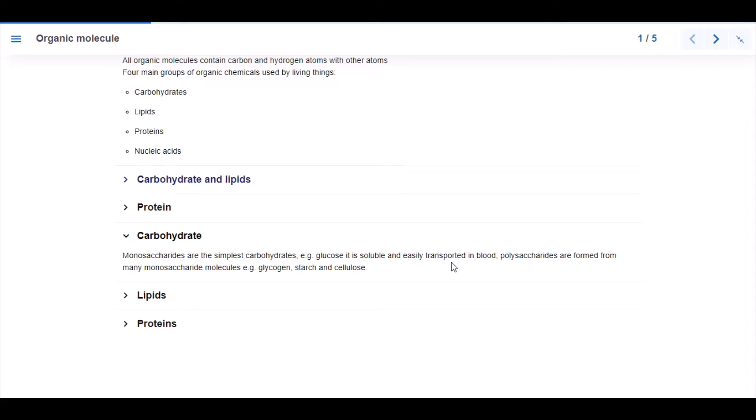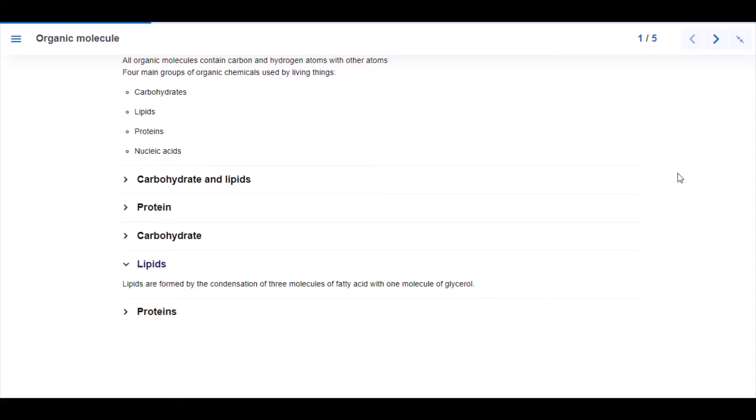Carbohydrates: monosaccharides are the simplest forms of carbohydrates. Glucose, for example, is a soluble form of carbohydrates and is easily transported in blood. Polysaccharides are formed from many monosaccharide molecules, e.g. glycogen, starch, and cellulose.